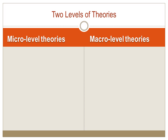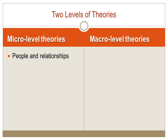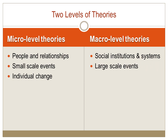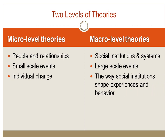There are two levels of theories: micro and macro. Micro indicates small, or in the case of theory, an individual level. And macro indicates large, or in the case of theory, the larger system, such as large-scale events or social institutions.